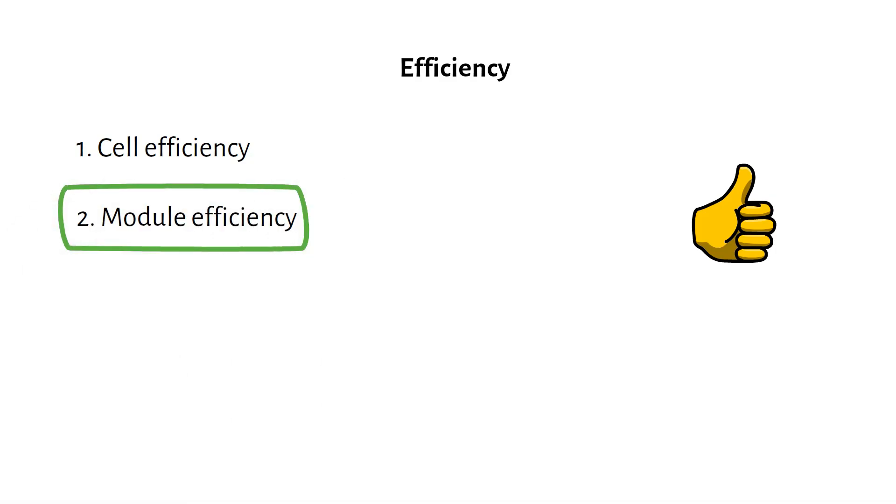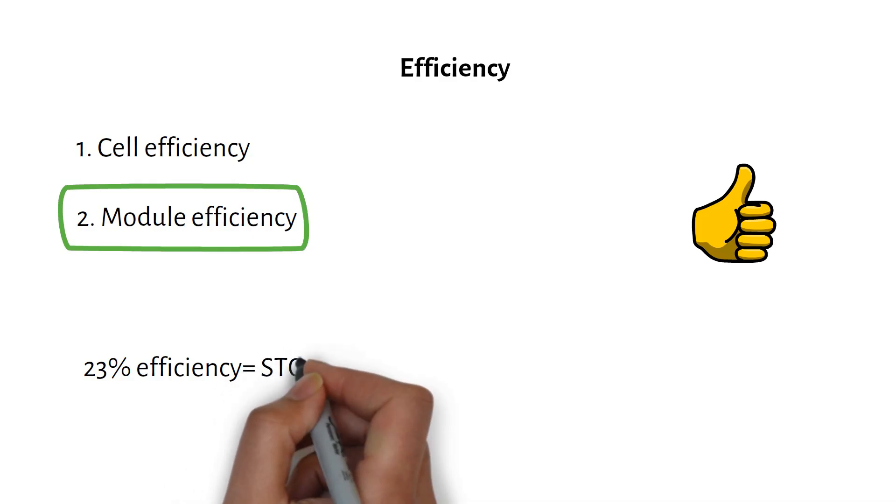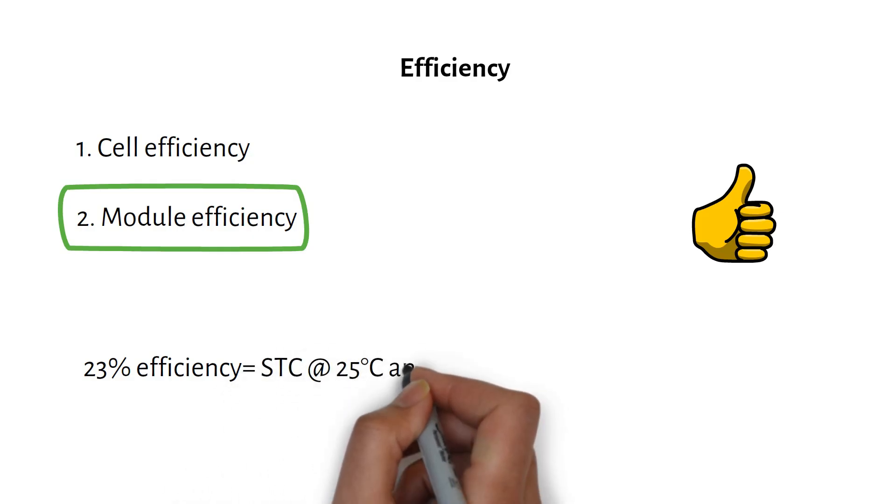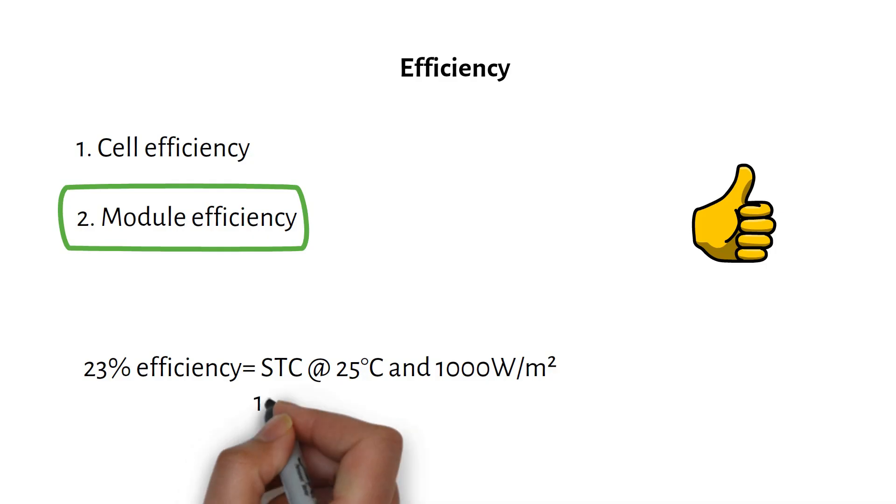Now, let's talk about solar panel efficiency. If you learned something new in the video, please give it a like. Solar panel efficiency can be confusing. There are two types, cell efficiency and module efficiency. Module efficiency is the most used. When a panel is listed at 23% efficiency, it means that under standard test conditions, which is 25 degrees and 1000 watts per square meter of sunlight, one square meter of the panel will produce 230 watts. This includes the frame.